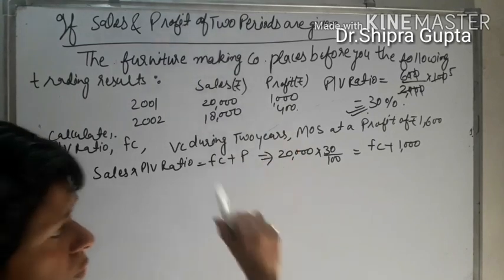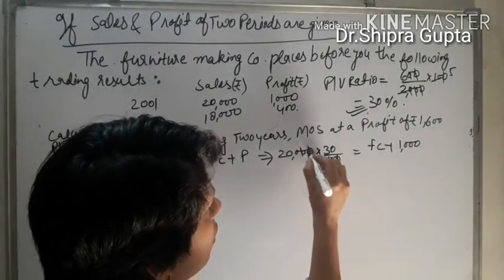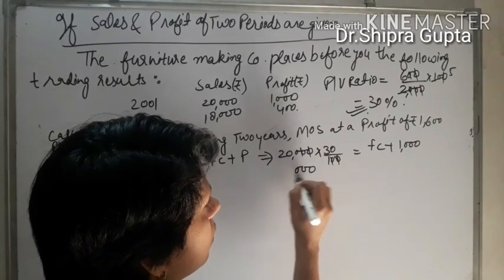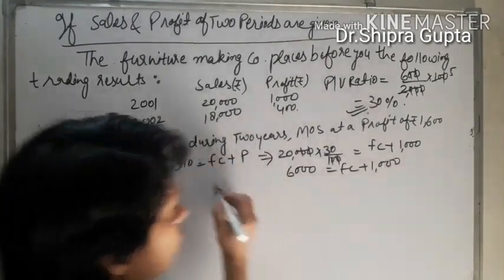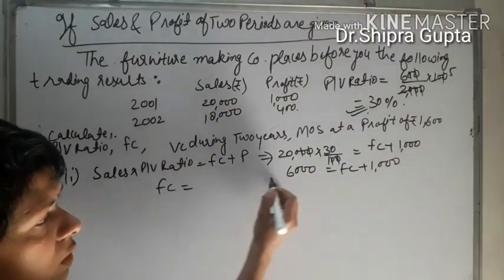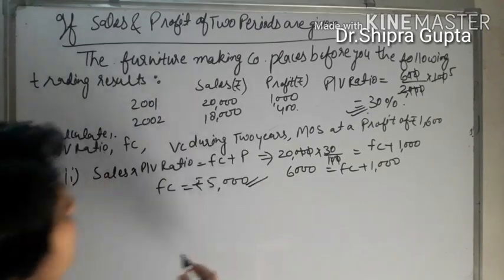So fixed cost plus 1,000. Fixed cost will be 6,000 minus 1,000, which means 5,000 rupees. Second answer calculated.